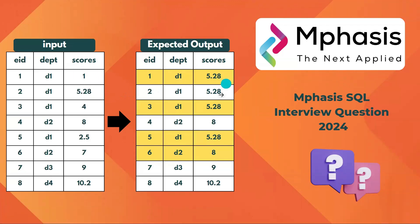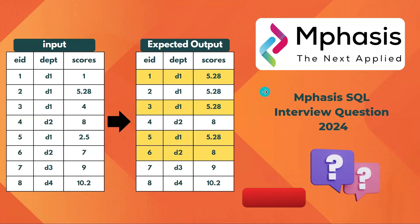In this way we need to update our scores column values for each department based on the maximum score. If you already know the solution, post it in the comment box and don't forget to subscribe to the channel. Let's see how we can solve this.